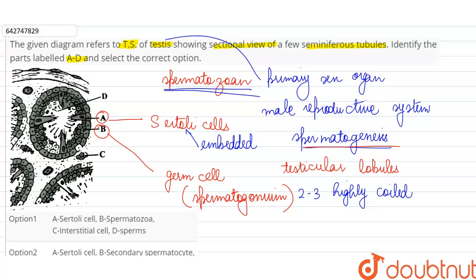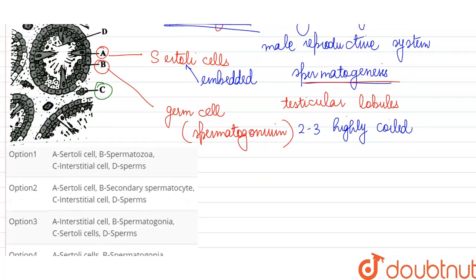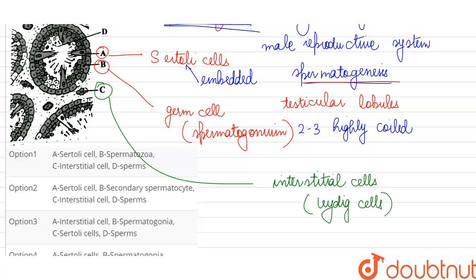Next, the part which has been labeled C, we can see it is not inside one of the seminiferous tubules but it is outside. It is in the interstitial space between the seminiferous tubules. So these are the interstitial cells or the Leydig cells which have very important endocrine function in the male reproductive system.